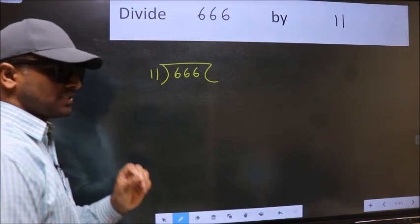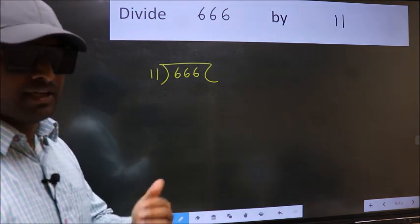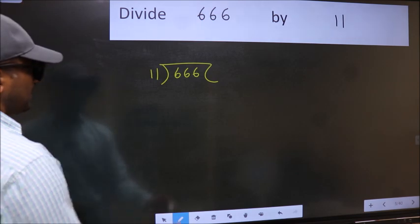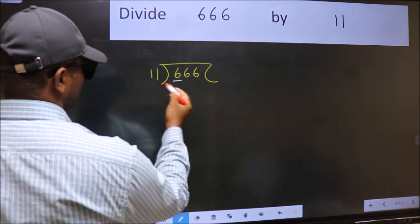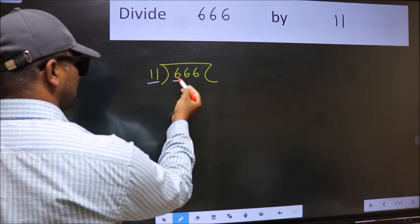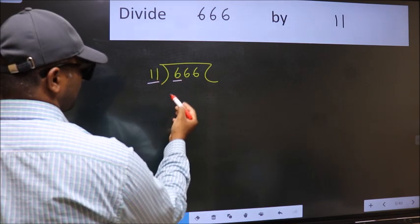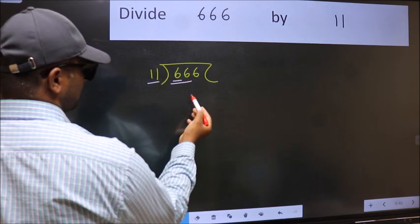This is your step 1. Next, here we have 6 and here 11. 6 is smaller than 11, so take two numbers, 66.